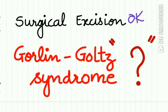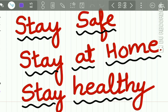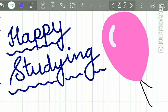Regarding treatment and prognosis, OKCs and tumors are surgically excised. If you encounter a patient with multiple odontogenic keratocysts in the jaws, the patient should be assessed for Gorlin-Goltz syndrome by looking for ophthalmologic, osseous, dental, neurologic, and other features to rule out the syndrome. Stay safe, stay at home, stay healthy — we will be uploading more lectures during this quarantine period. Happy studying!